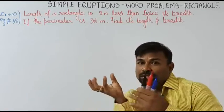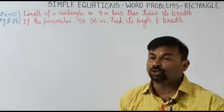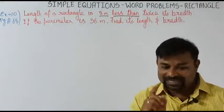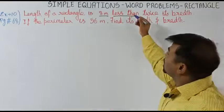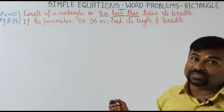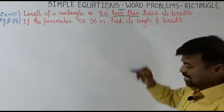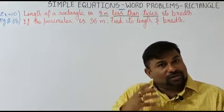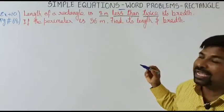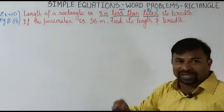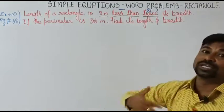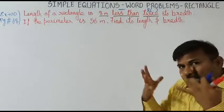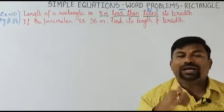Let us search for the keywords in the question — the words which can be converted in terms of mathematics. First: '8 meters' is a number. 'Less than' is the first keyword — less than means minus, subtraction. Next keyword: 'twice' — whenever we discuss twice, it's nothing but two times of something. So less than means subtraction, twice means two into something.